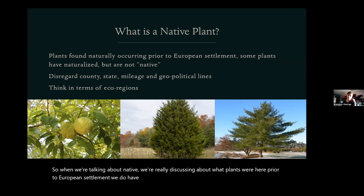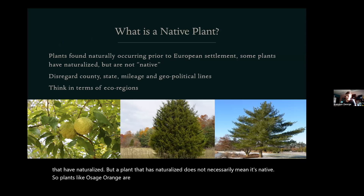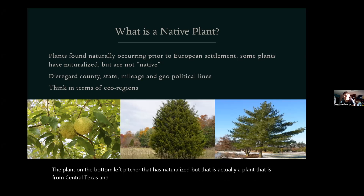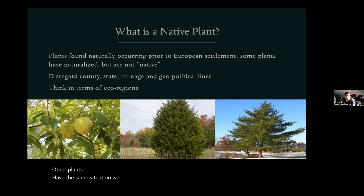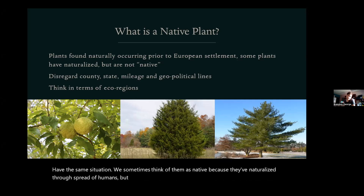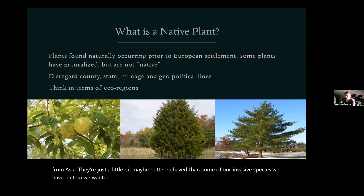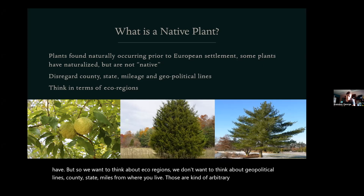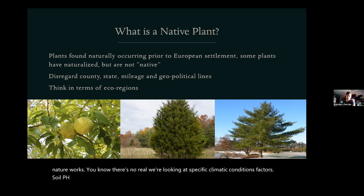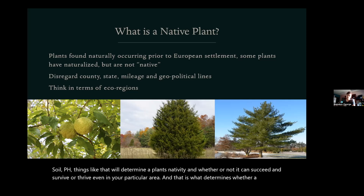We do have plants that are native to other parts of the United States that have naturalized, but a plant that has naturalized does not necessarily mean it's native. Plants like Osage orange have naturalized but are actually from the central Texas and Arkansas area. We sometimes think of them as native because they've naturalized through spread by humans, but they're essentially just as exotic as things from Asia — just maybe a little better behaved than some invasive species. We want to think about ecoregions, not geopolitical lines like county, state, or miles from where you live. Nature looks at specific climatic conditions, soil pH, and things like that which determine a plant's nativity and whether it can thrive in your particular area.